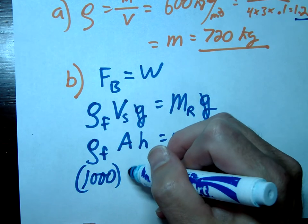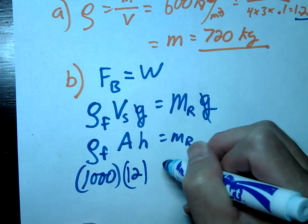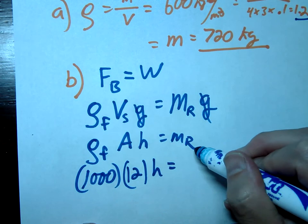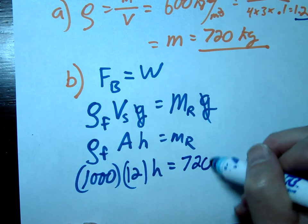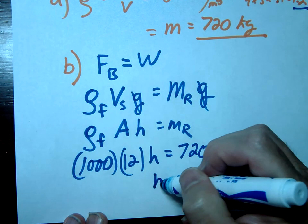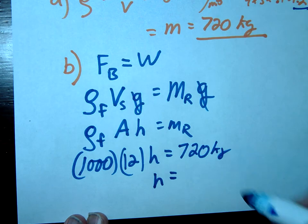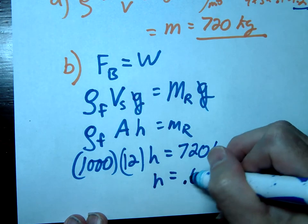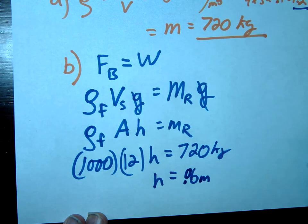The area was 4 times 3 which is 12 times h equals the mass of the raft which is 720. Go ahead and solve for h.